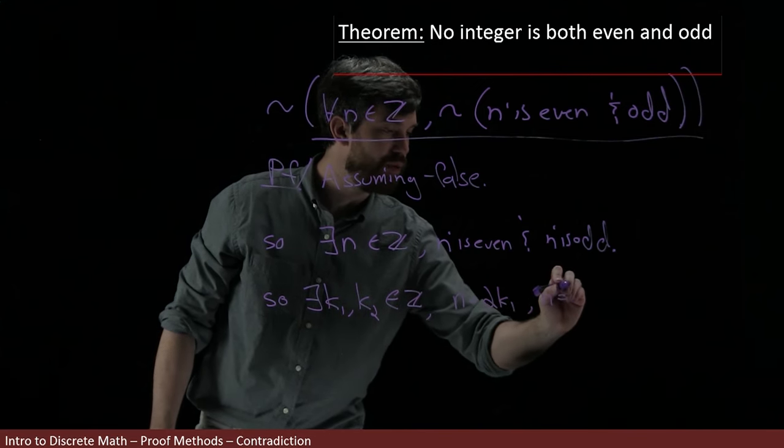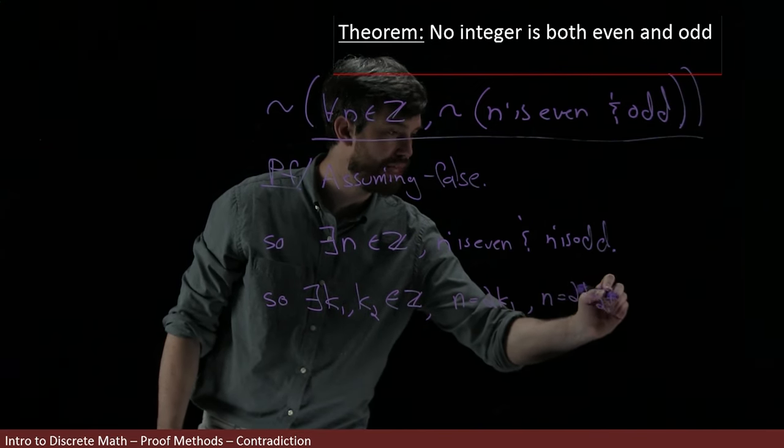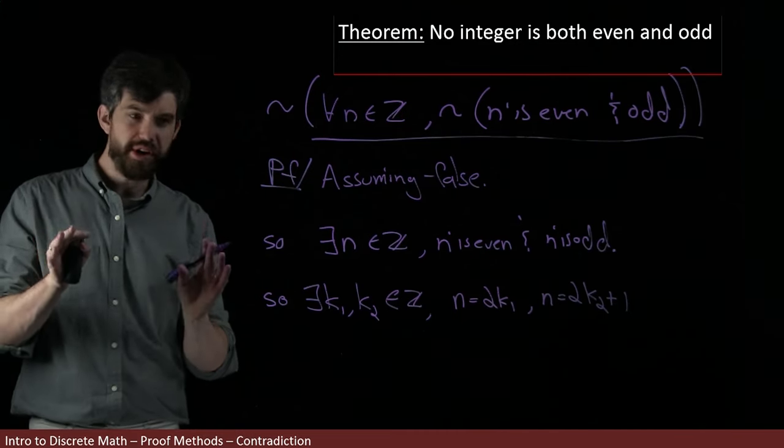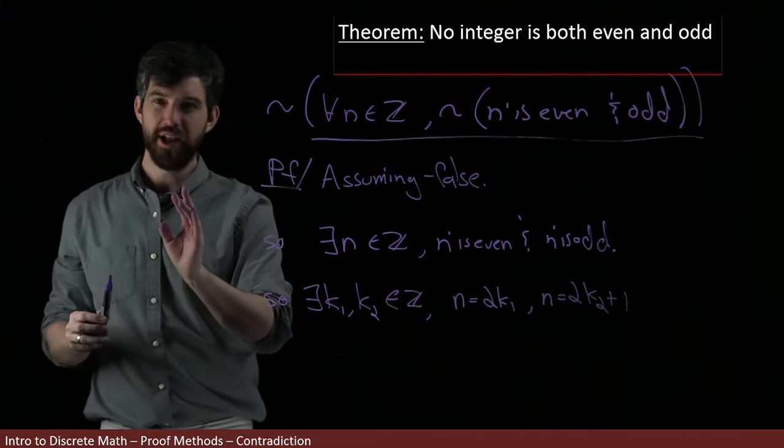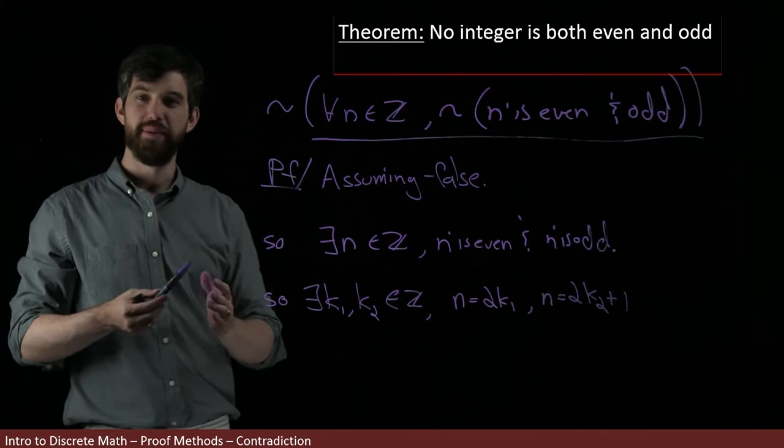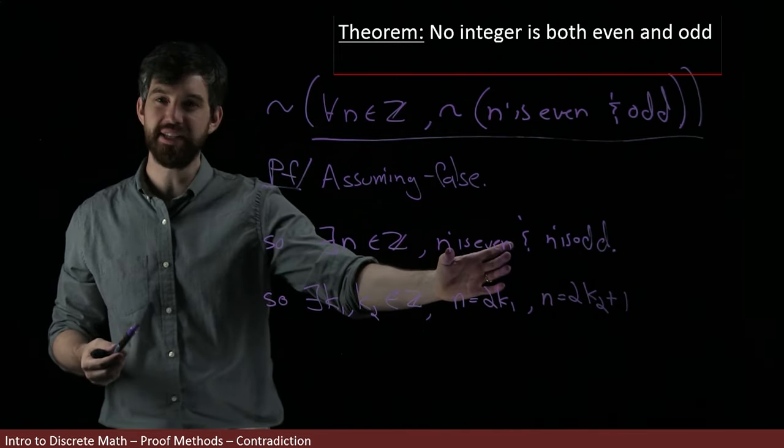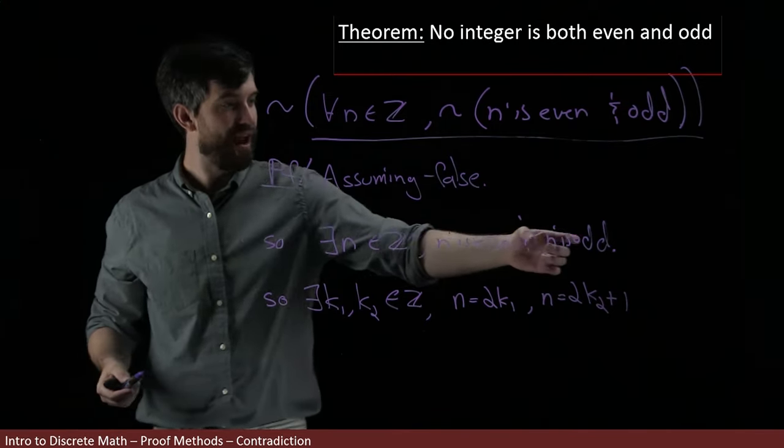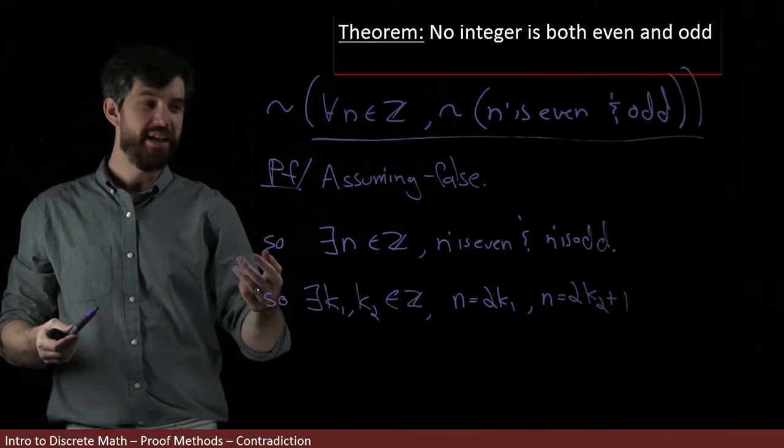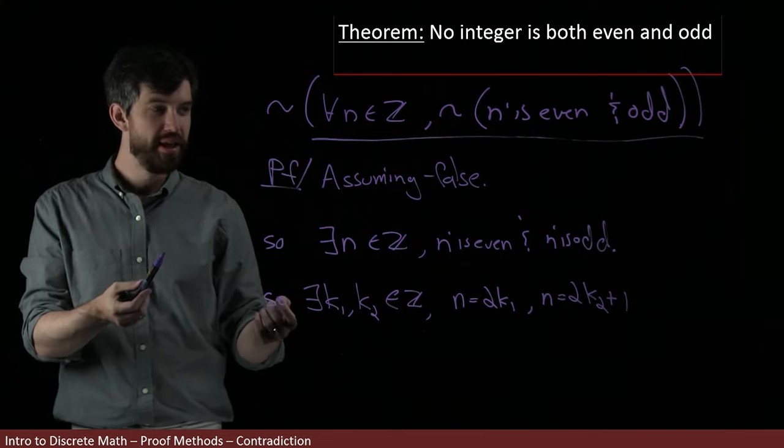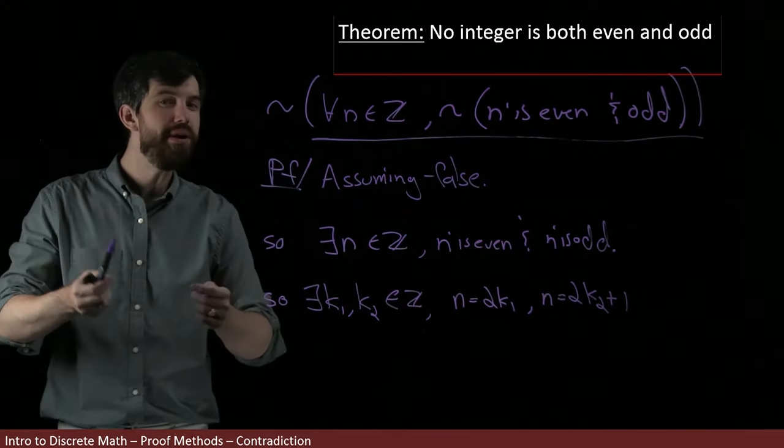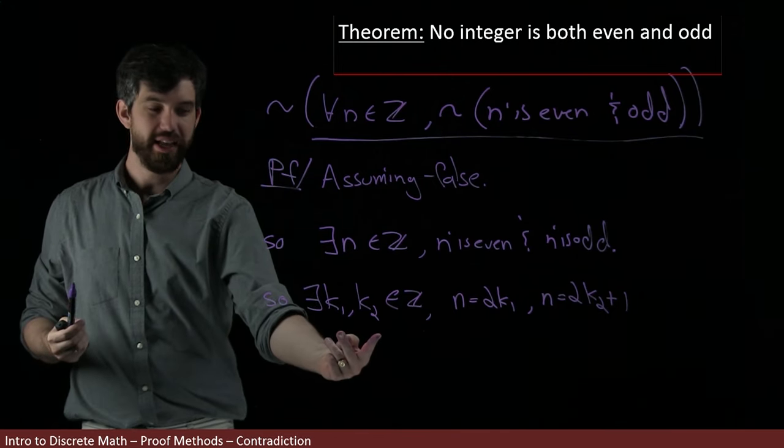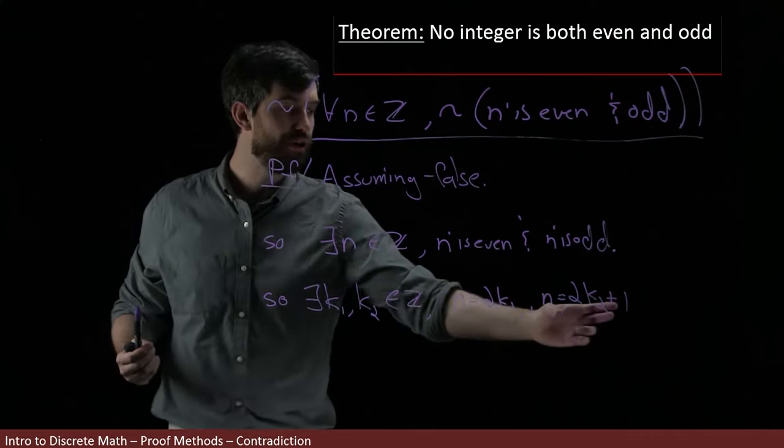And that the n is going to be 2k2 plus 1. By the way, it's very important here that you don't use the same k. This is often a place that people can make mistakes in their proofs. Like the claim for n is even is there exists a k, so it can be written as 2k. And the claim for n is odd is there exists a k, so it can be written as 2k plus 1. But because I'm doing both of these at the same time, they don't necessarily have the same k. So I choose different ones. I index them as k1 and k2, and I get these two different claims.